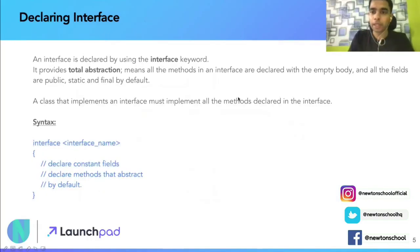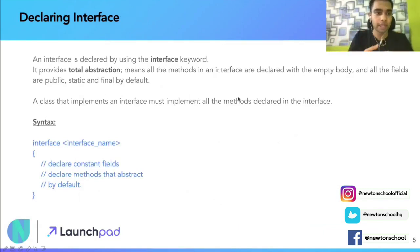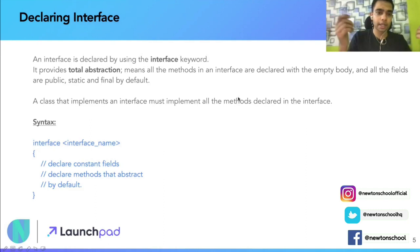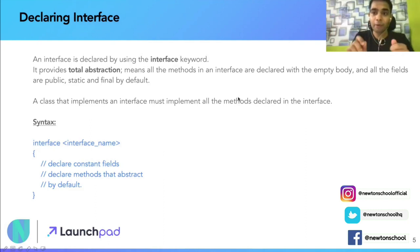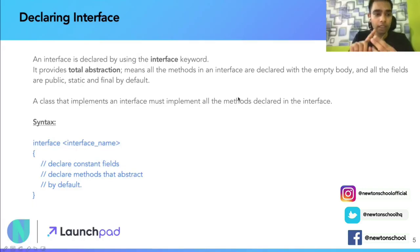How to declare an interface. To declare an interface, use the keyword 'interface'. Just like abstract classes use the 'abstract' keyword, interfaces use the 'interface' keyword. It provides total abstraction — all methods are declared with an empty body, and all fields are public, static, and final by default. That is what we mean by total abstraction.